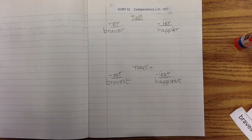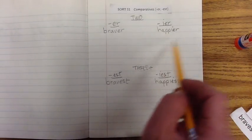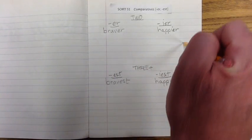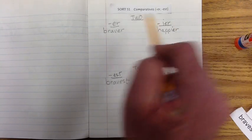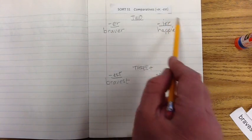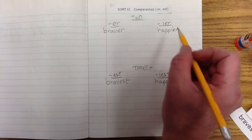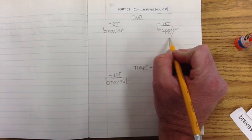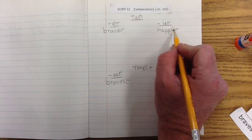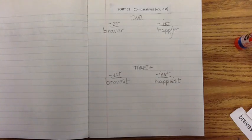Okay. Well, pretty simple, pretty easy. Again, the thing that we have to remember is that when we compare two items or two people, we use E-R or I-E-R. And it's I-E-R when the base word has a Y at the end. Remember, we drop the Y and add I-E-R.